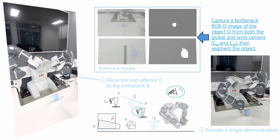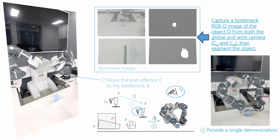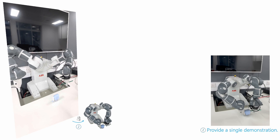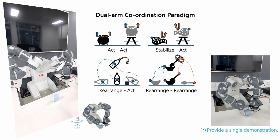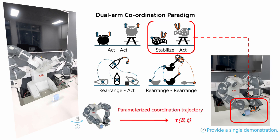Next, we perform a single demonstration for the robot to complete the insertion task. Following our proposed dual-arm coordination paradigm, we parameterize the coordinated trajectory from the demonstration based on the bottleneck pose and time. The robot first moves one arm to hold the sharpener's handle and then moves the second arm to insert the pencil.